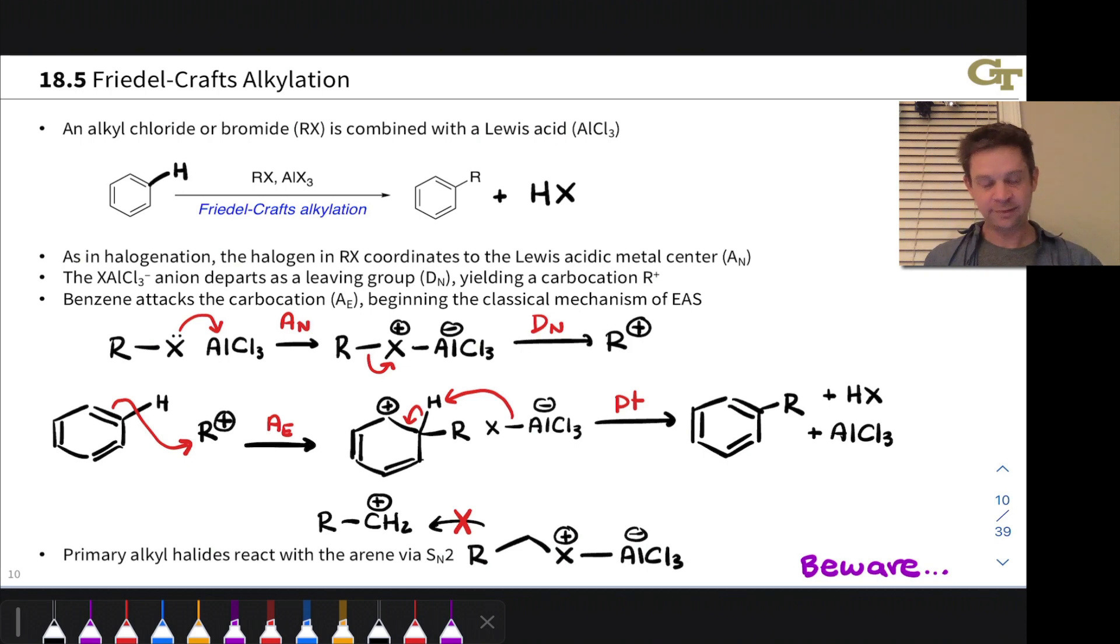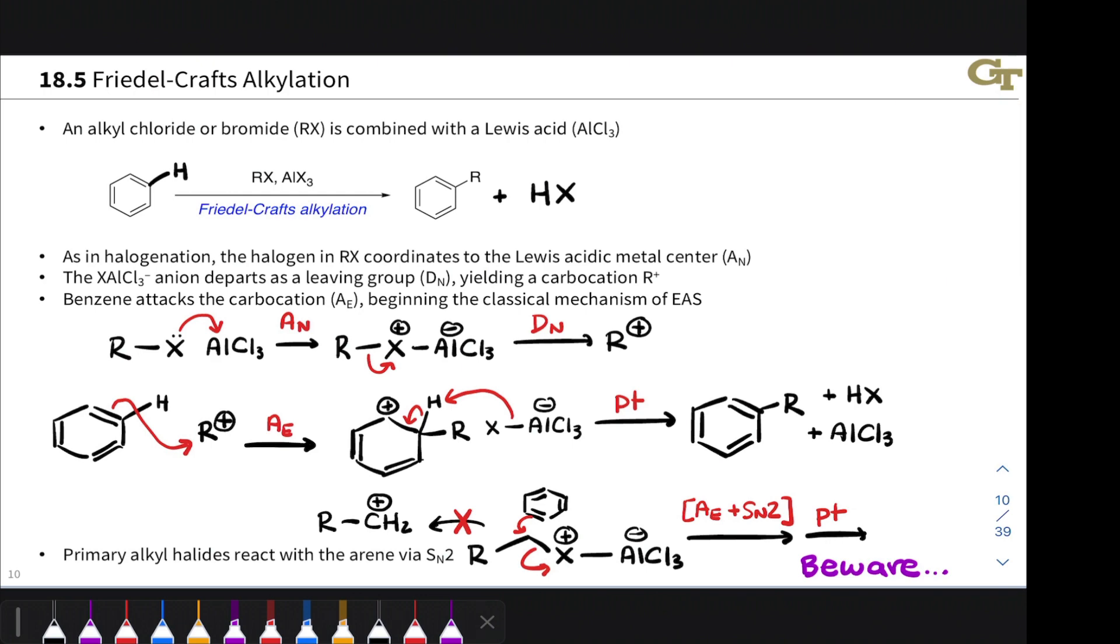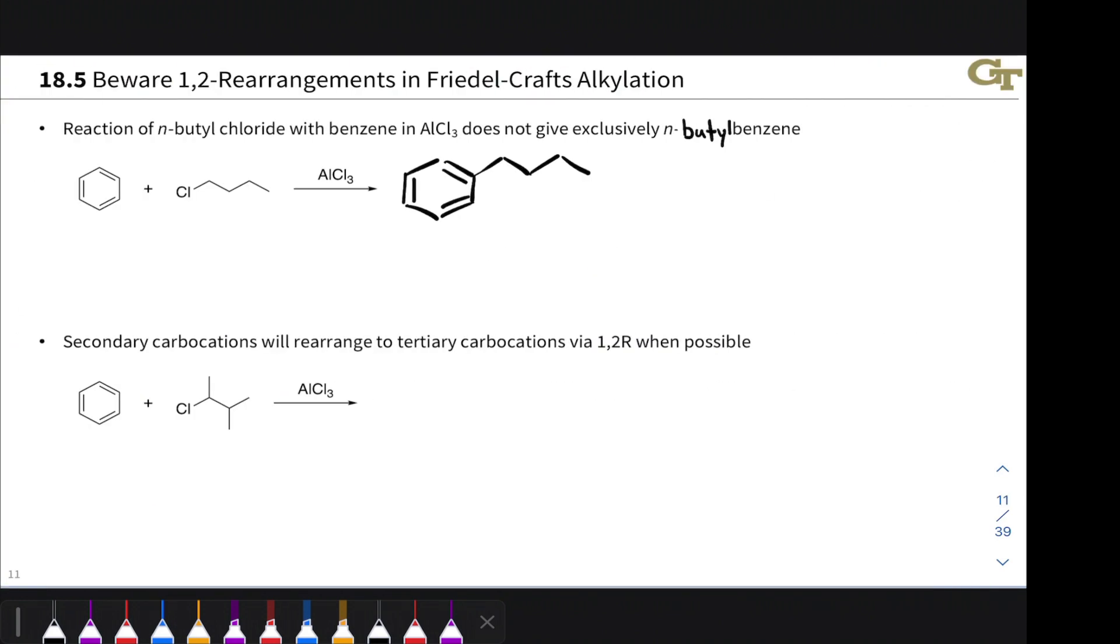However, this species, this reactive intermediate right here, can still react with benzene via an SN2 rather than an SN1-like mechanism. So for example, benzene can displace that leaving group in an SN2-looking step. And then after loss of a proton in that second step of the standard EAS mechanism, we get the primary alkyl-substituted benzene. So this looks very appealing, and it does work in some cases. However, this reaction does still have pitfalls that have to do with the possibility of rearrangements of carbocations and carbocation-like reactive intermediates under these reaction conditions.